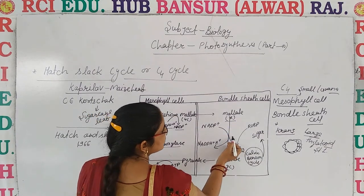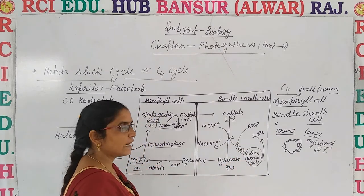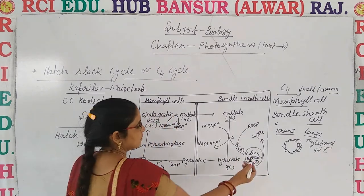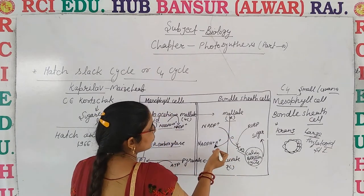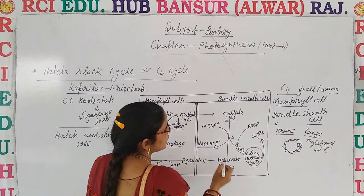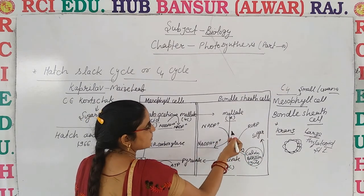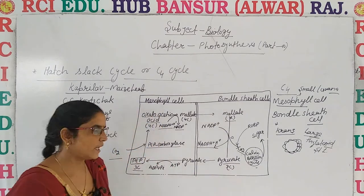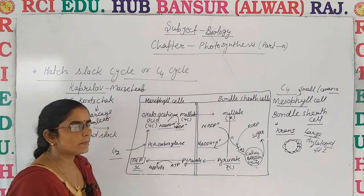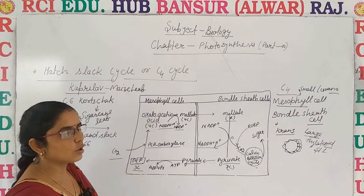Here, decarboxylation process takes place. That carbon dioxide enters into the Calvin-Benson cycle where formation of sugar happens. Reduction of NADP takes place, forming NADPH. Due to decarboxylation, malate is converted into pyruvate. This pyruvate comes back again into the mesophyll cell, where it is later converted back into phosphoenolpyruvic acid, completing the cycle.